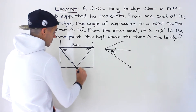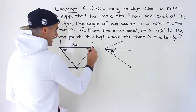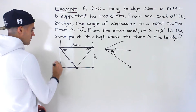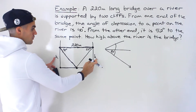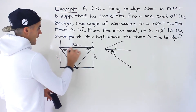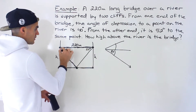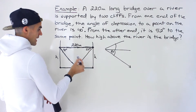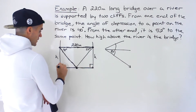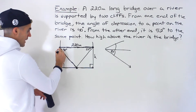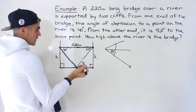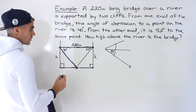The river is here, so they're asking for the distance from the bridge down to the river — this H value. Both of these H values are going to be the same. Notice that we have a large triangle here, but it's not a right triangle. However, we do have two right triangles that we've created, and those are the triangles we are going to use.